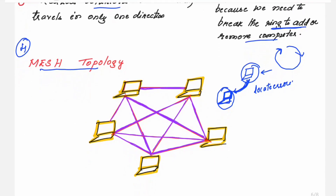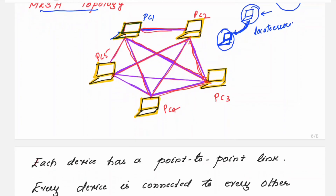The fourth type is called mesh topology. In mesh topology, every PC is connected to every other PC. For example, PC1 is connected to PC2, PC3, PC4, and PC5. Similarly, PC2 is connected to all other four PCs, and PC3 is also connected to all other four PCs. Because of the way the cables look between the different PCs, it resembles a mesh — that is why it is called mesh topology.